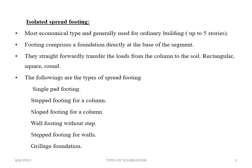Going to isolated spread footing — it is the most economical type and is generally used for ordinary buildings. It can be used up to 5 stories, depending on soil characteristics. This isolated footing consists of a foundation directly at the base of the column, and the load is transferred from the column to the soil directly. The shape of the isolated spread footing can be rectangular, square, or round.